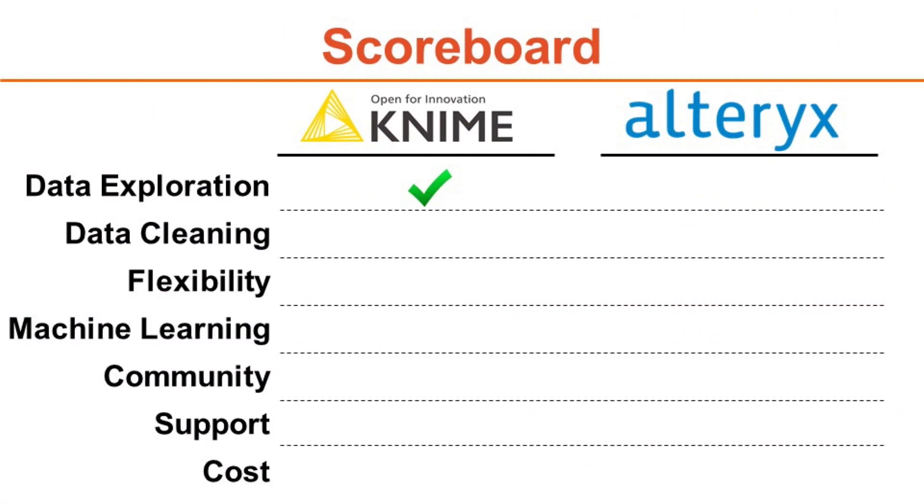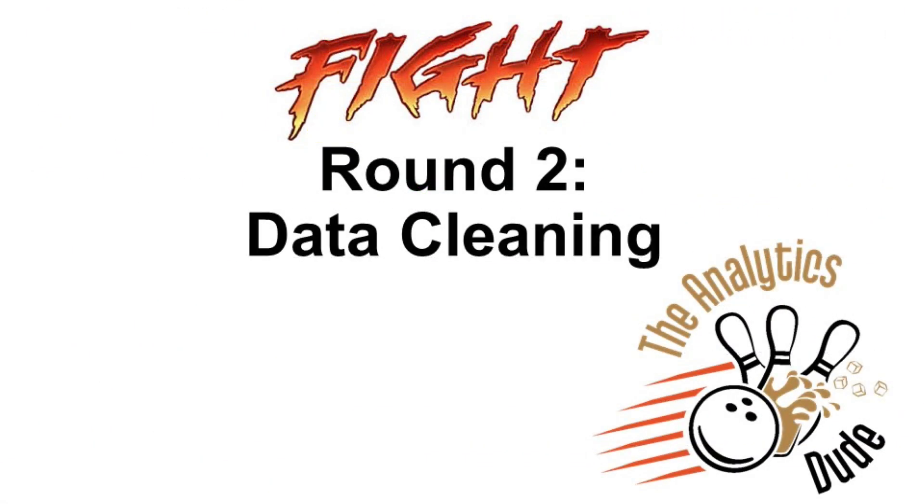In Alteryx, when you click run, it runs the entire workflow. If you want to run only one node at a time, there's not really a way to do that without disabling large portions of your workflow. In KNIME, you can choose to run individual nodes or the entire thing at once. Also, in Alteryx you have to add a browse node every time you want to see results coming out of a section, whereas in KNIME all you have to do is right-click to see the table. Data exploration goes to KNIME.